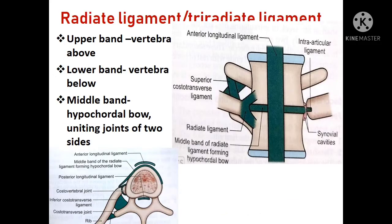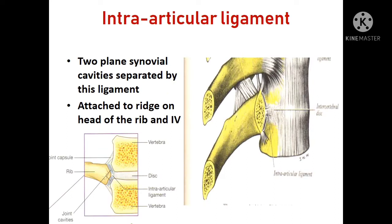The tri-radiate ligament has three bands: the upper band attached to the vertebra above, the lower band attached to the vertebra below, and the middle band, which forms the hypocaudal band — it unites the ligaments on the two sides. The intra-articular ligament separates the two plane synovial cavities, and it is attached from the head of the rib to the intervertebral disc.